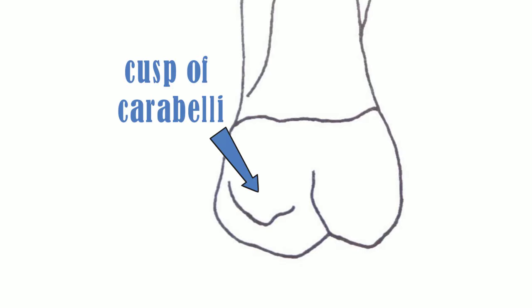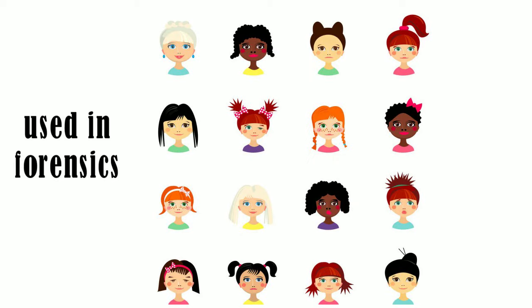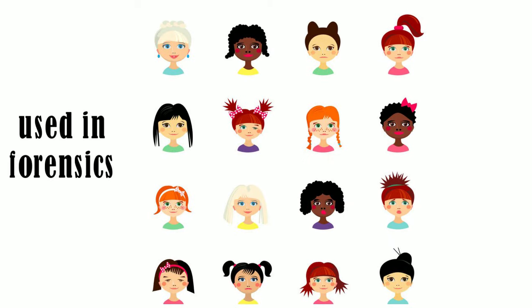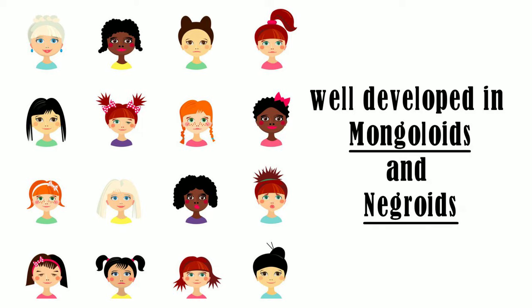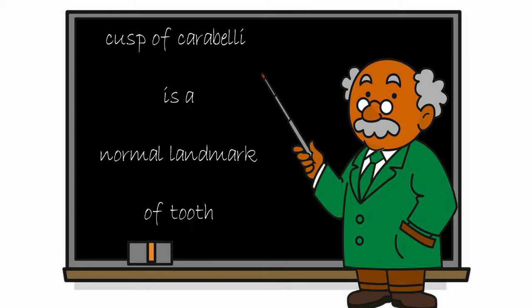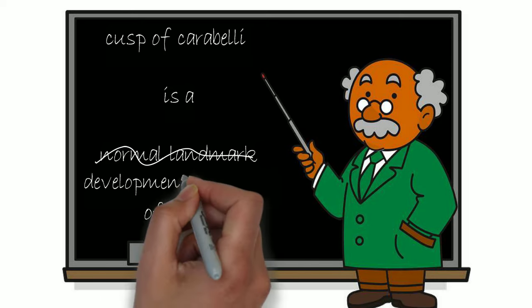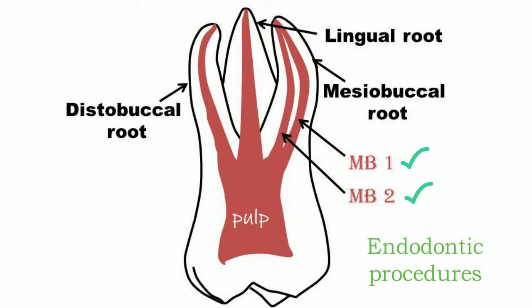The development of the cusp of Carabelli varies from being a well-formed cusp to a small groove in different races, and it is sometimes used in forensics to identify populations. For example, the cusp of Carabelli is generally well-developed in Mongoloid and Negroid races. Due to its varying development, some researchers do not consider it a normal landmark but a developmental anomaly. The mesiobuccal root usually has two root canals, called MB1 and MB2, which is important for endodontic procedures.